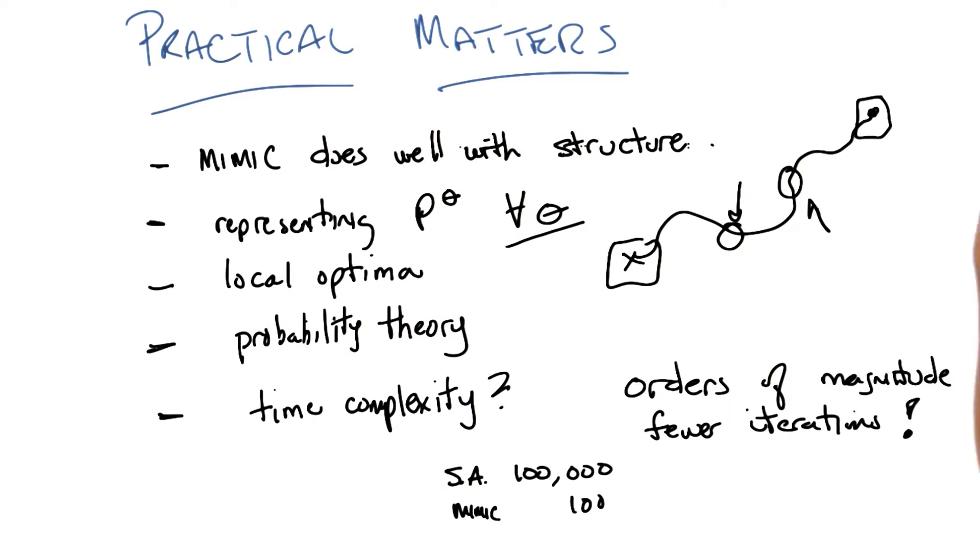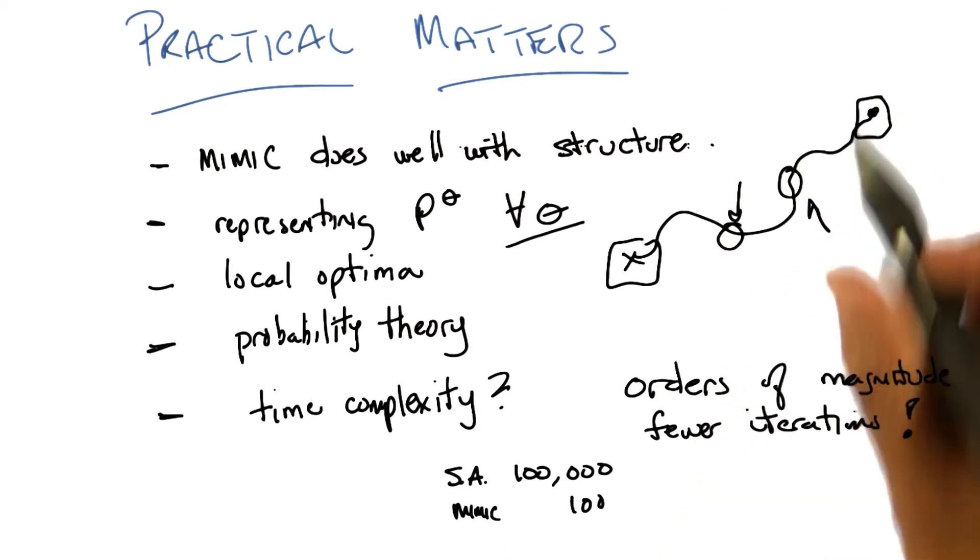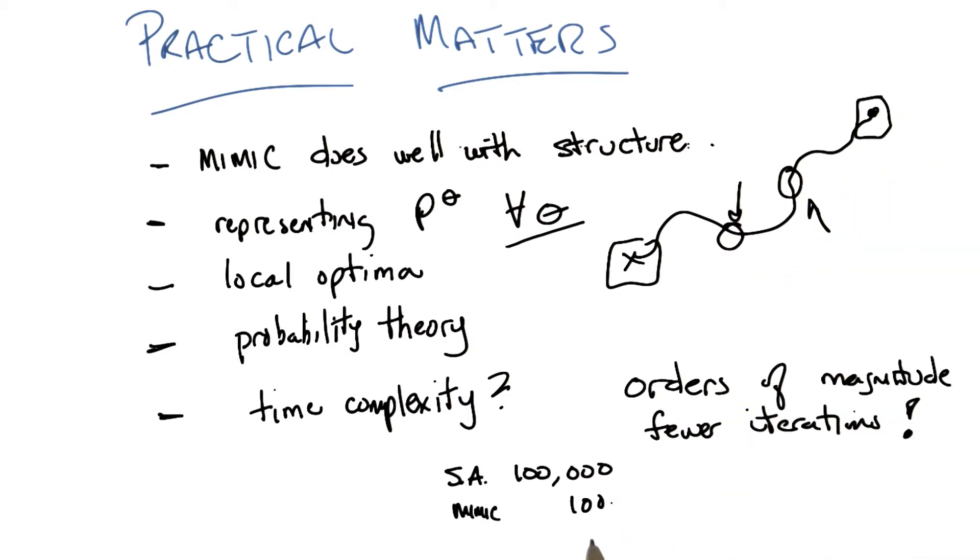So, it turns out that that's not good enough. It turns out that the fact that MIMIC can do something in three, four, five, six, seven orders of magnitude fewer iterations isn't an argument for always using it. Can you imagine why not?